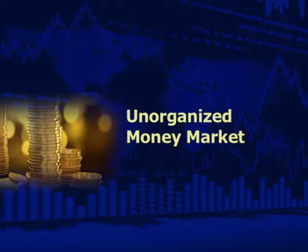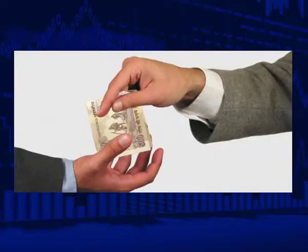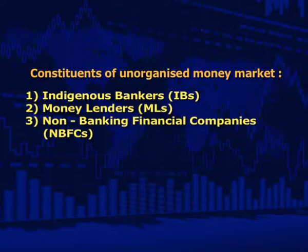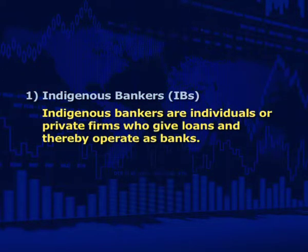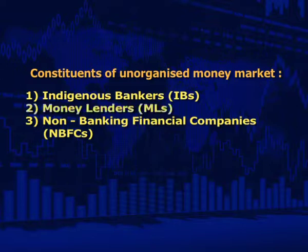The unorganized money market mostly finances short-term financial needs of farmers and small businessmen. The main constituents of the unorganized money market are: first, indigenous bankers — individuals or private firms who give loans and thereby operate as banks. They accept deposits as well as lend money, mostly operating in urban areas especially in western and southern regions of the country. The volume of their credit operations is not known, and their lending operations are completely unsupervised and unregulated. Over the years the significance of indigenous bankers has declined due to the growing organized banking sector.